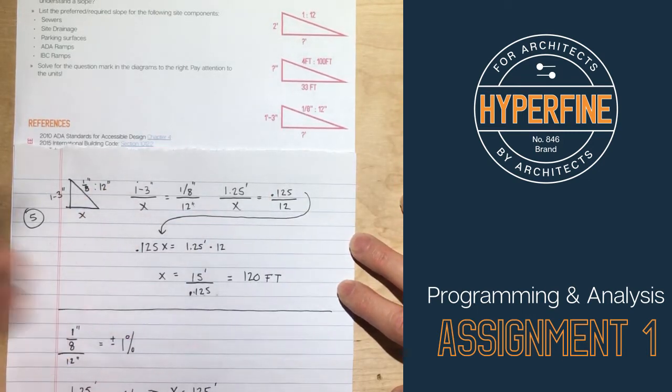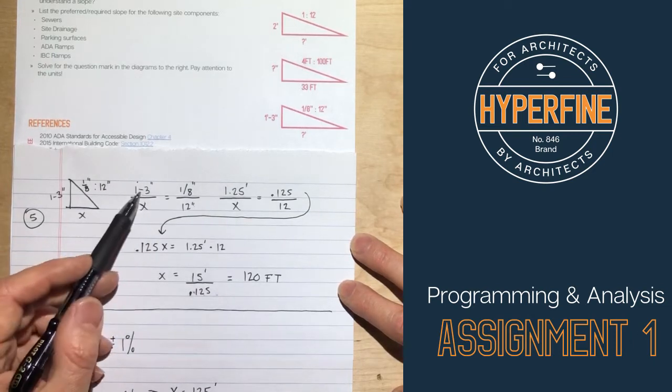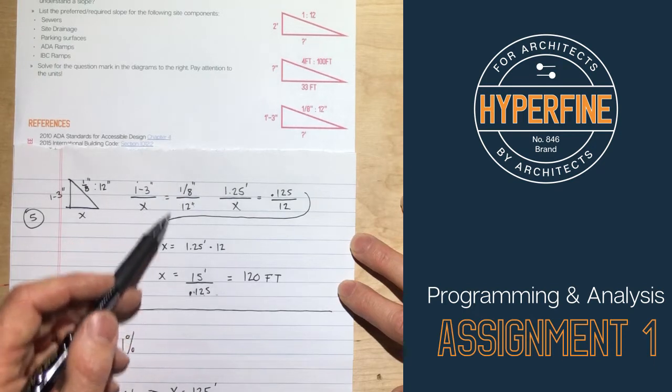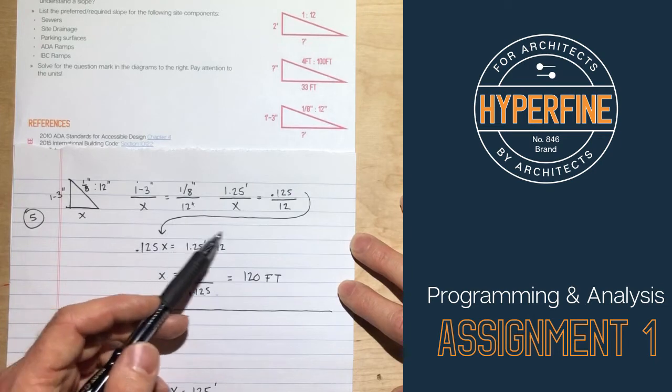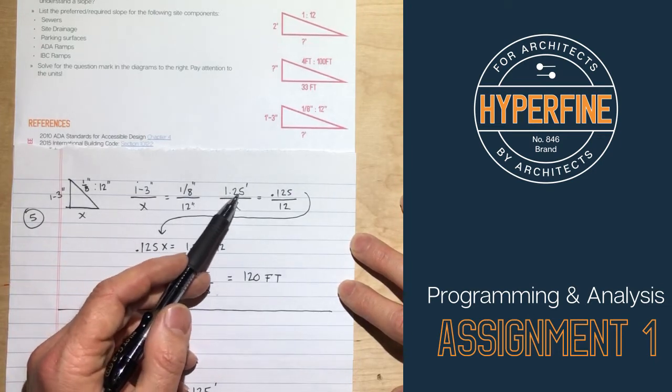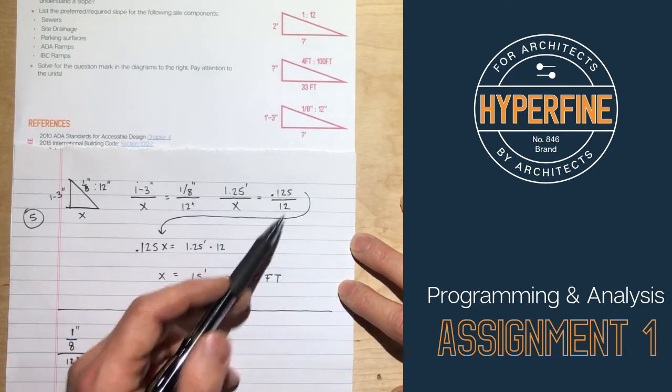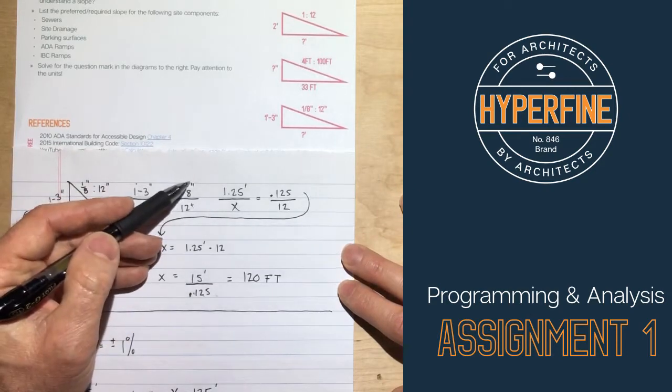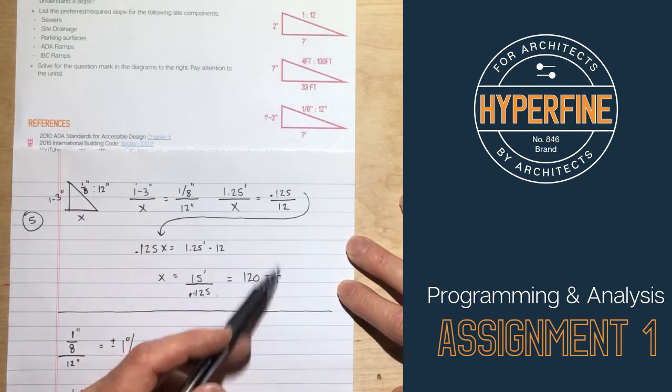So the best way to set this one up, again, is a ratio. This is 1 feet 3 inches over x equals 1 eighth of an inch over 12 inches. And let's rewrite that into just something more simple. You know, it's hard to do 1 foot 3, so that becomes 1.25 feet over x equals 0.125 over 12. When you're dealing with two things that are the same unit, it sort of doesn't matter. You can cross those out because the inches will cancel, and it just becomes a ratio.